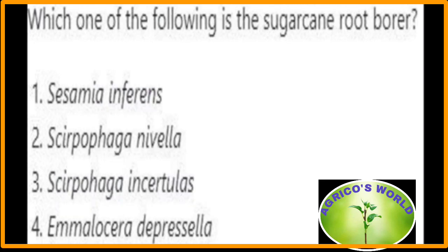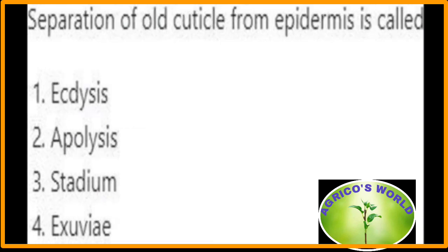Which one of the following is a sugarcane root borer? Emmalocera depressella is a sugarcane root borer. Separation of the old cuticle from the epidermis is called apolysis.